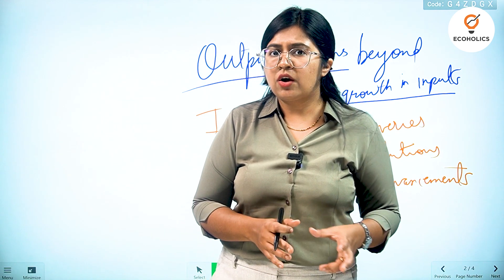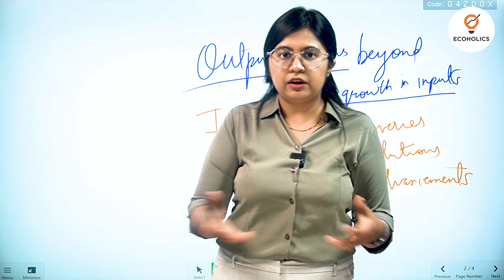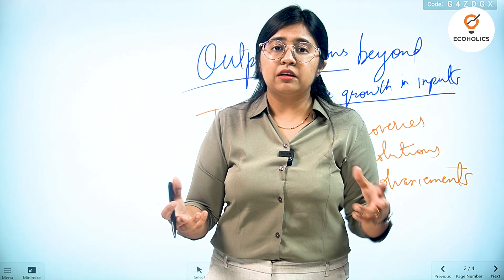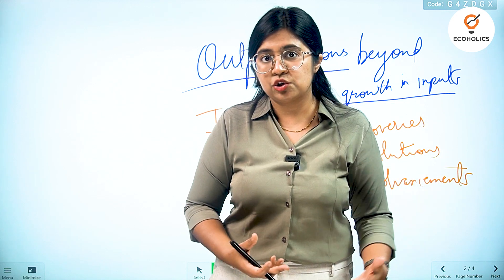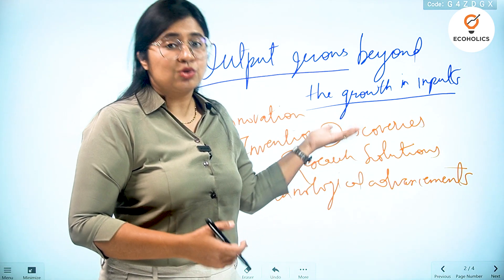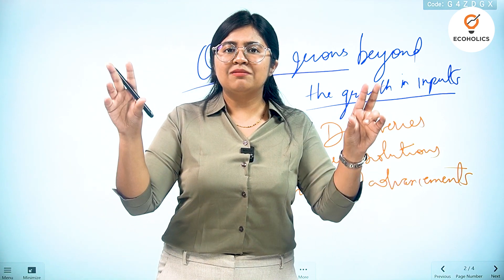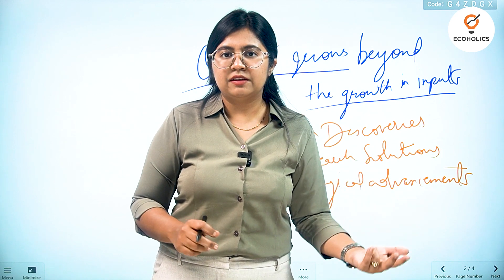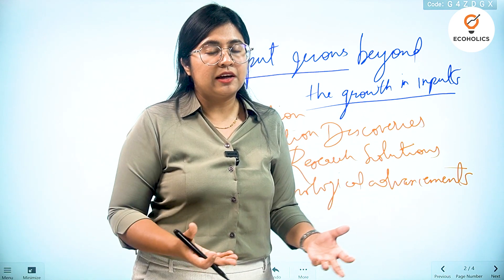This gap between the growth of output and growth in inputs — that surplus of output — is called Solow's Residual. This is a very interesting concept. When the neoclassical growth theory research paper came, after this theory there were many economists who read the papers given by Solow and talked about what the economist Solow was pointing to, which they called Solow's Residual.